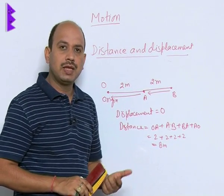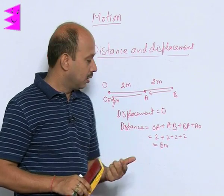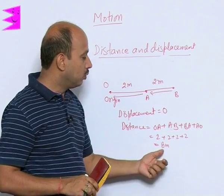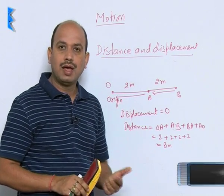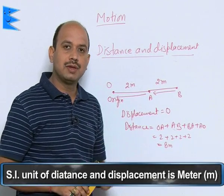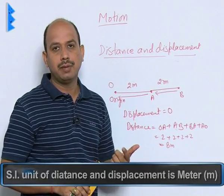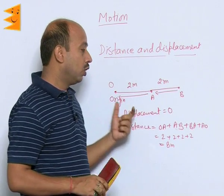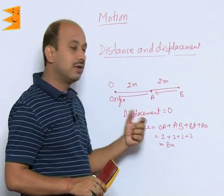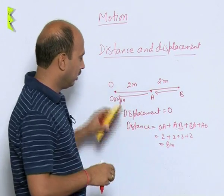Distance and displacement are both measured by the same unit, which is the meter. So the SI unit of distance and displacement is meter. Now we will study another example related to this.